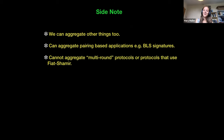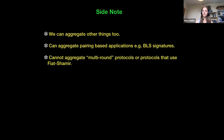One quick side note: we can aggregate other things as well. In particular, the paper describes how to aggregate BLS signatures. We're not able to aggregate anything which is multi-round or that uses the Fiat-Shamir transform.